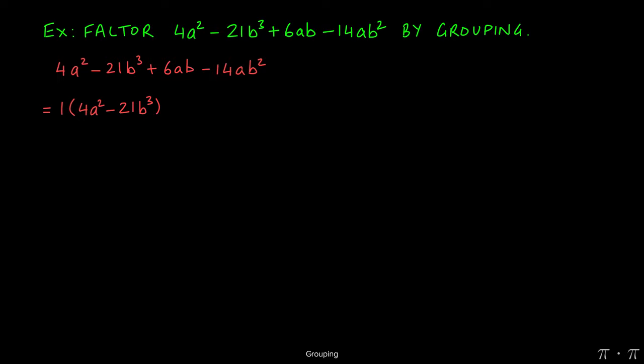For the last two terms we see there is a GCF of 2ab, so factoring that out and dividing 6ab by 2ab we get 3, and then negative 14ab squared divided by 7ab gives us negative 7b. Now the problem with this stage is that the binomials really don't match. We're not just off by signs, we don't even have the same binomial.